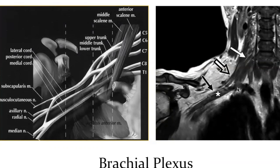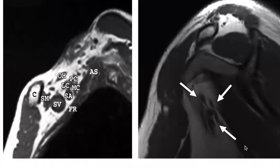This is a coronal oblique T1 image showing the components of the brachial plexus. These are the roots, and these are the levels of the scalene muscles where we see the trunks. The divisions extend from the outer margin of the scalene muscles up to the level of the clavicle. The divisions then form the cords, and the asterisk here marks the subclavian artery. The cord medial to it is the medial cord, the lateral cord, and the posterior cord.